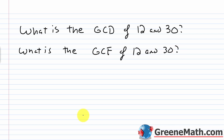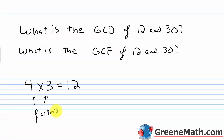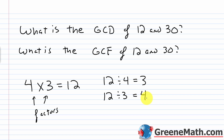Same exact thing. To think about this: if we have 4 times 3 equals 12, then 4 and 3 are called factors of 12. But they're also divisors — if I have 12 and divide by 4, I get 3 with no remainder. If a number is a factor of another, it's also a divisor. So when we ask for the greatest common divisor and the greatest common factor, we're asking for the same thing.